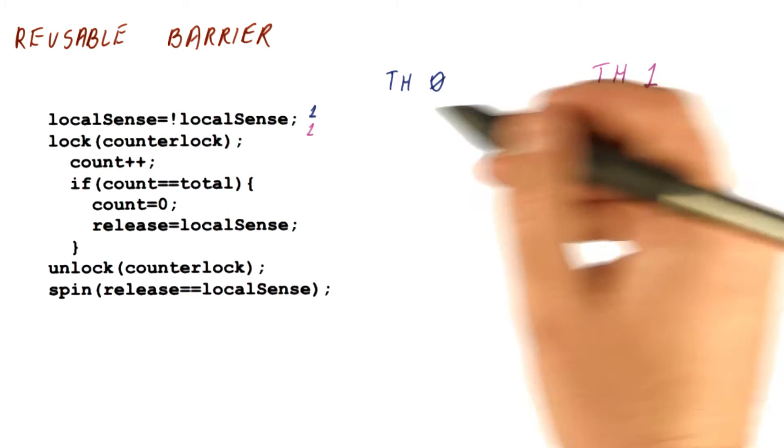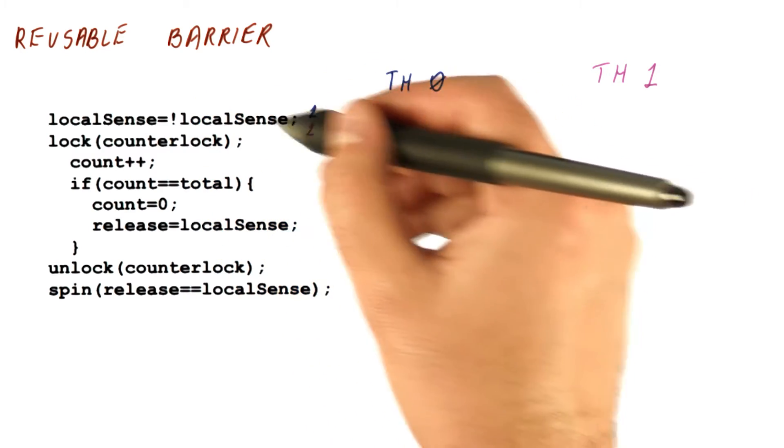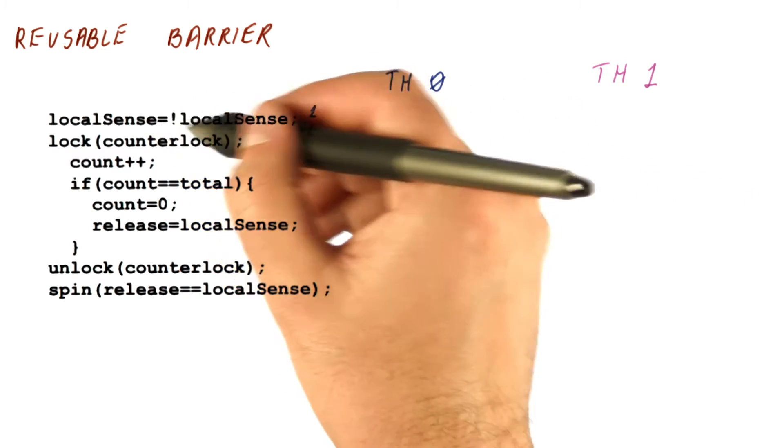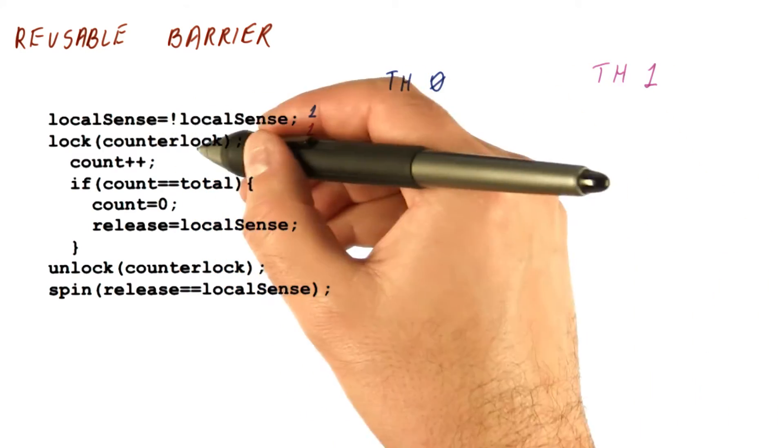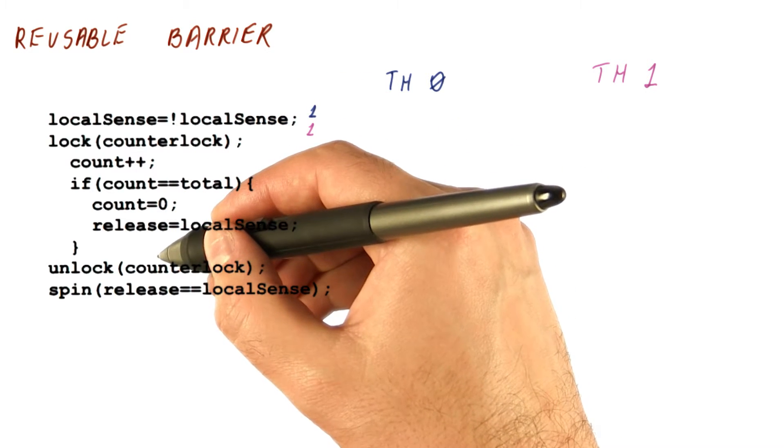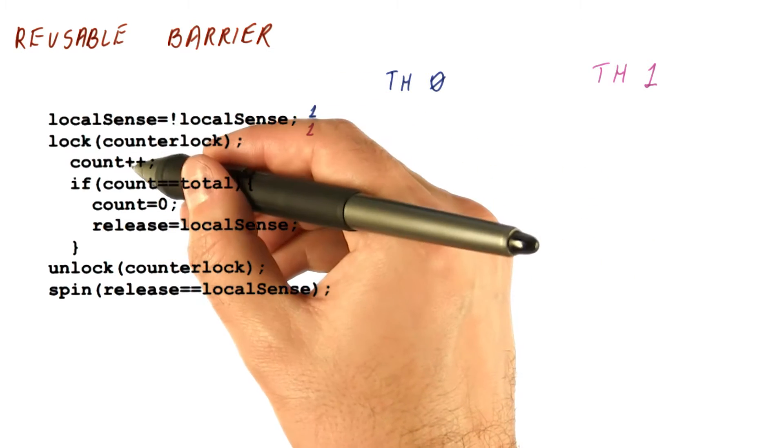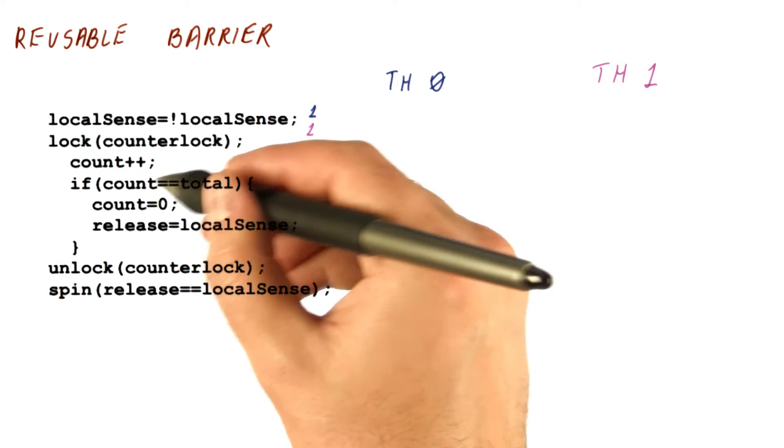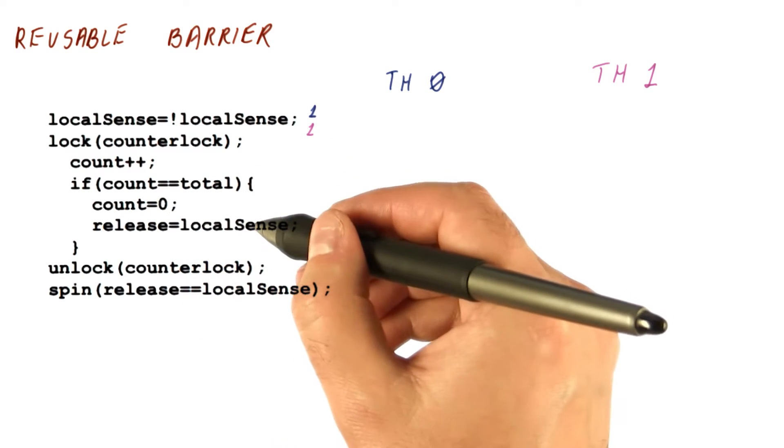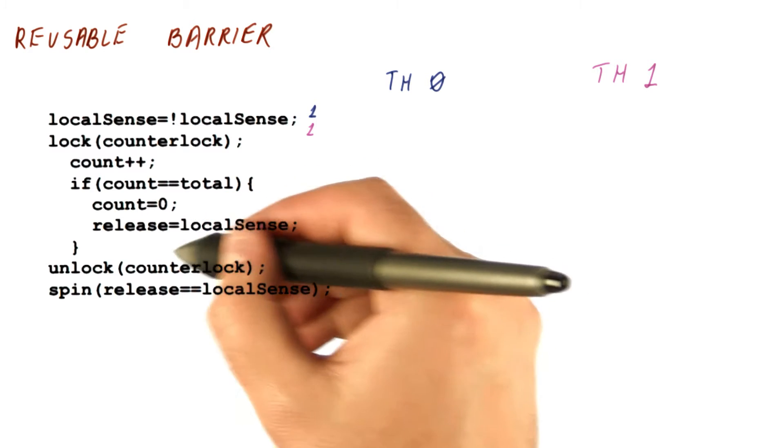Local sense is local to each thread, so each of them just sets a local variable independently, so this is not going to interfere with each other. Now one of the threads will enter the counter lock, increment the count, and if the count equals the total, they will reset the count and set the release to local sense.